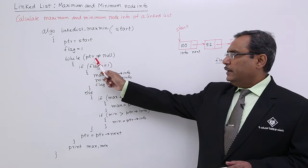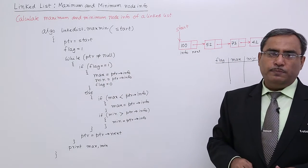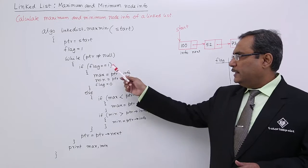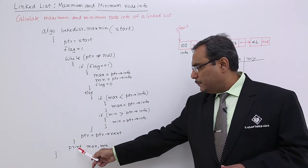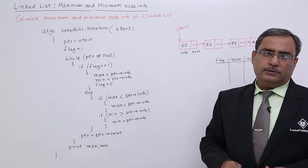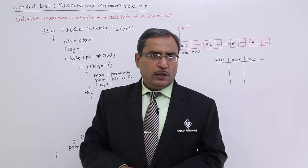In this way the loop will go on executing and it will get terminated when ptr becomes equal to null, and then it will exit from this while construct and print max and min.